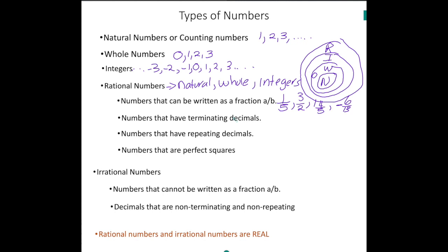Now decimals that terminate are rational numbers. So for example, 0.25, or 0 and 25 hundredths, to be mathematically correct, is a rational number. Now, 25 hundredths can be written as a fraction. It is 1 over 4.